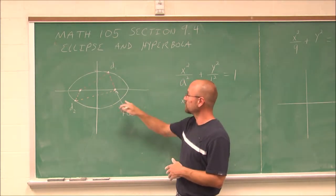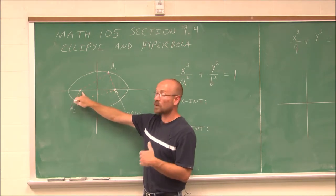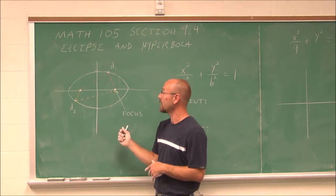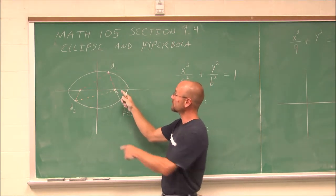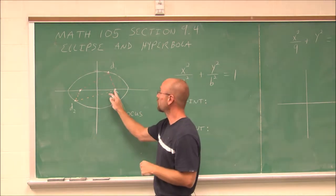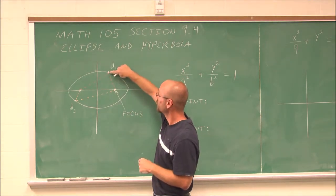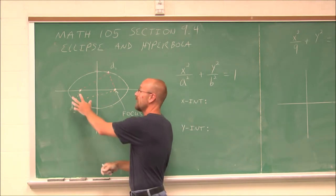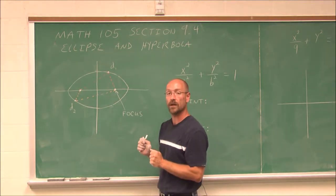What defines an ellipse are two points called foci — each one is a focus, more than one would be foci. Any point on this shape has the sum of the distances as a constant from these foci. Whether it's a point here or a point there, the sum of those distances will be the same — always a constant.